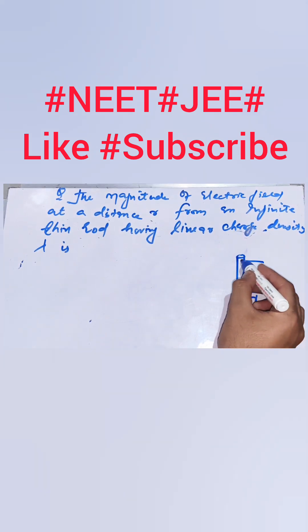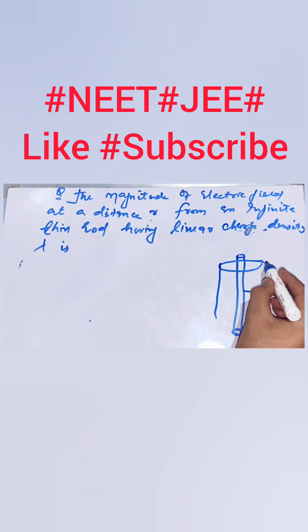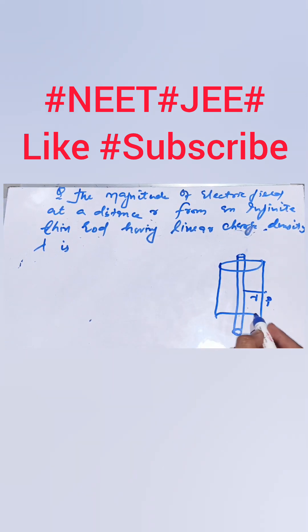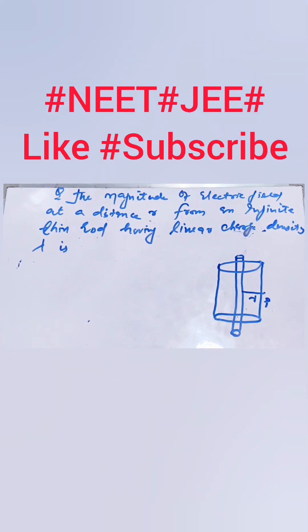For this I will use Gauss law. So I will draw a Gaussian surface such that this point P lies on the surface of this cylindrical Gaussian surface.